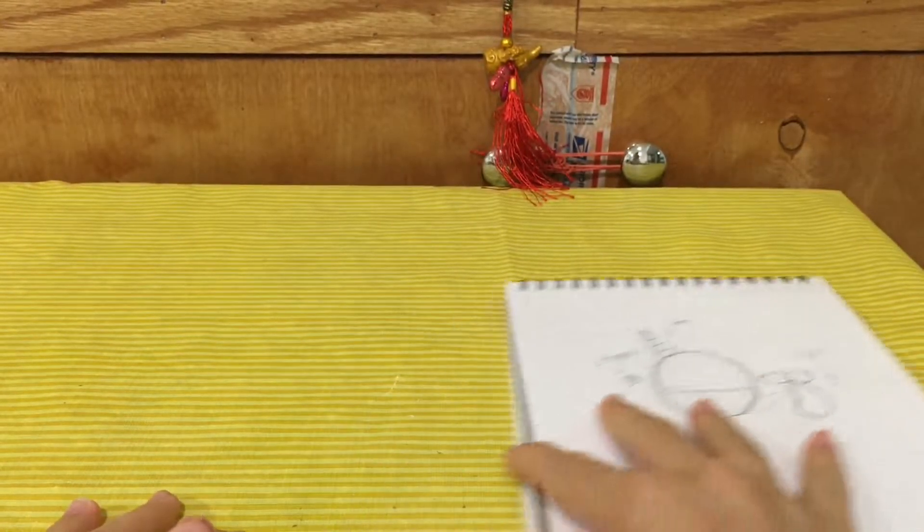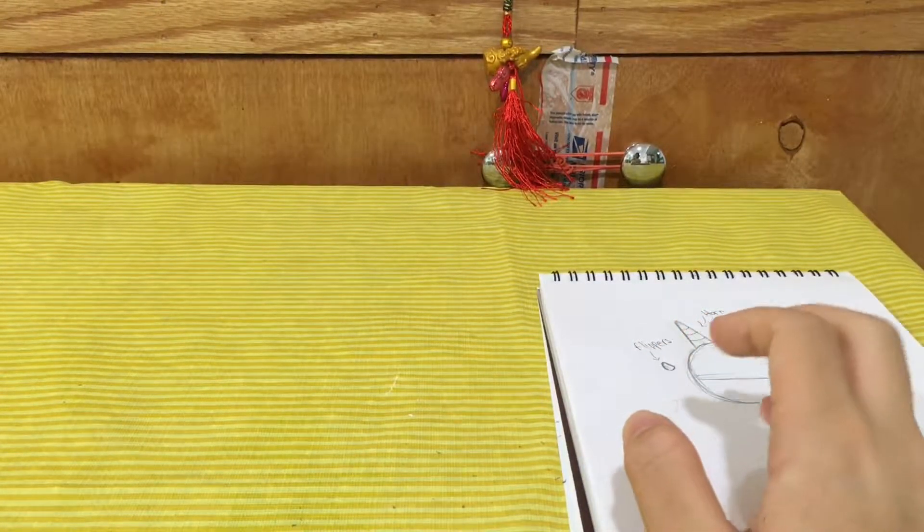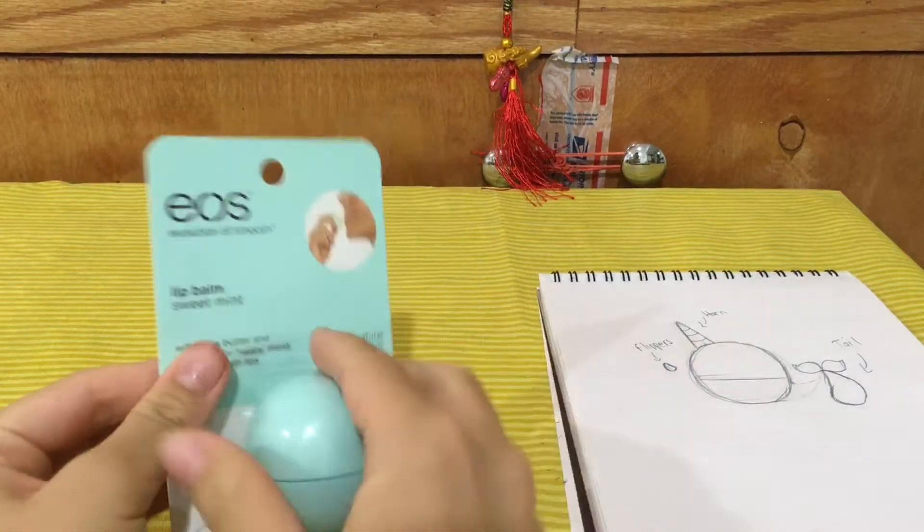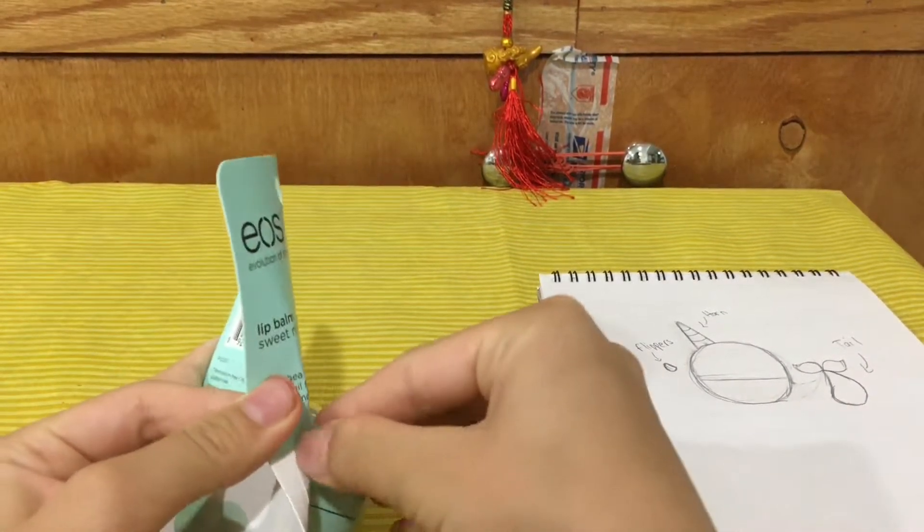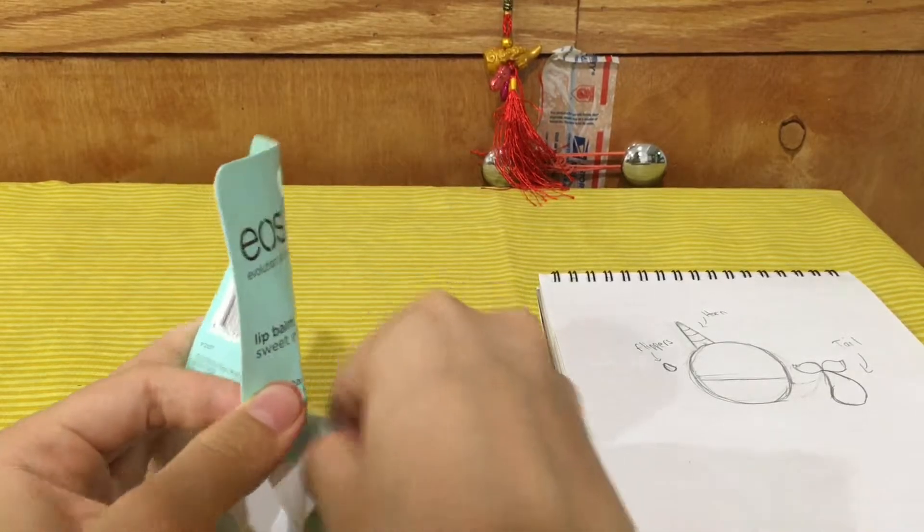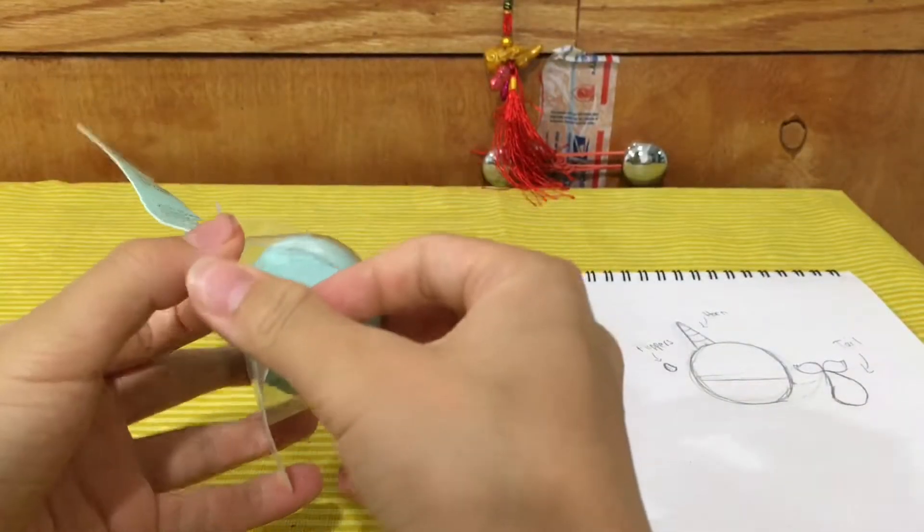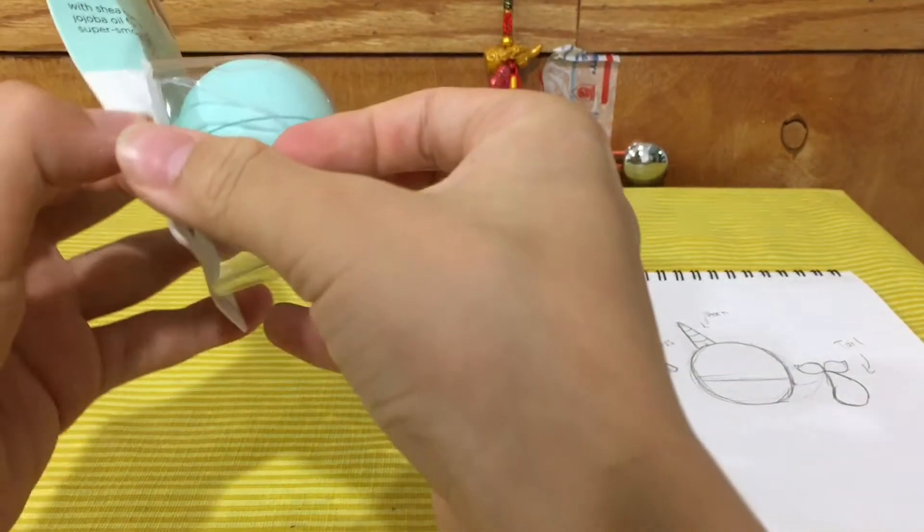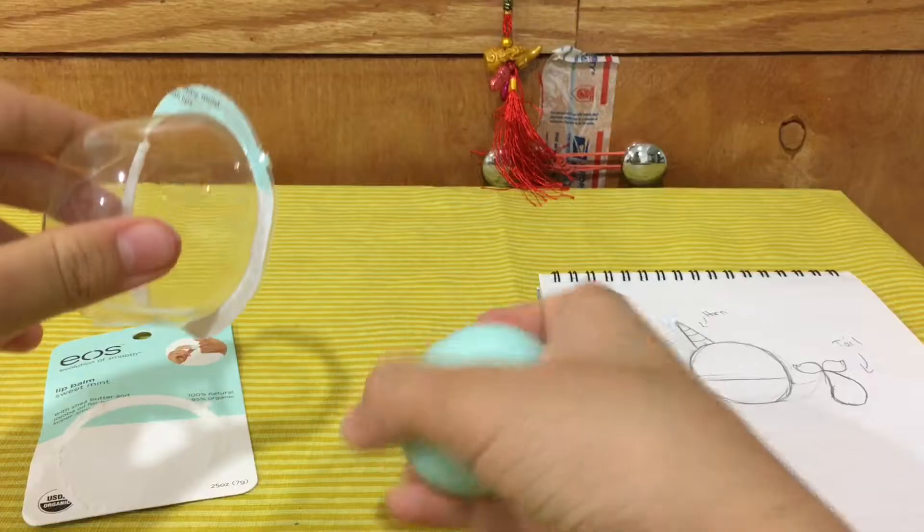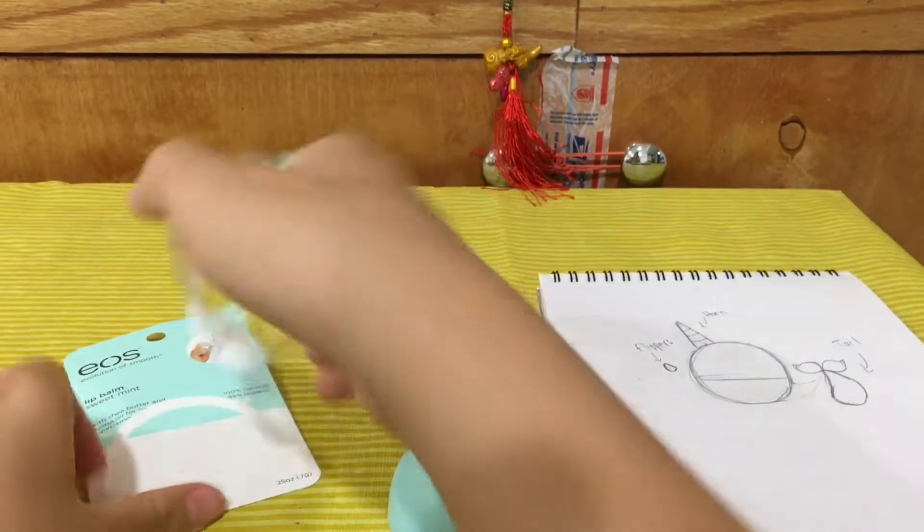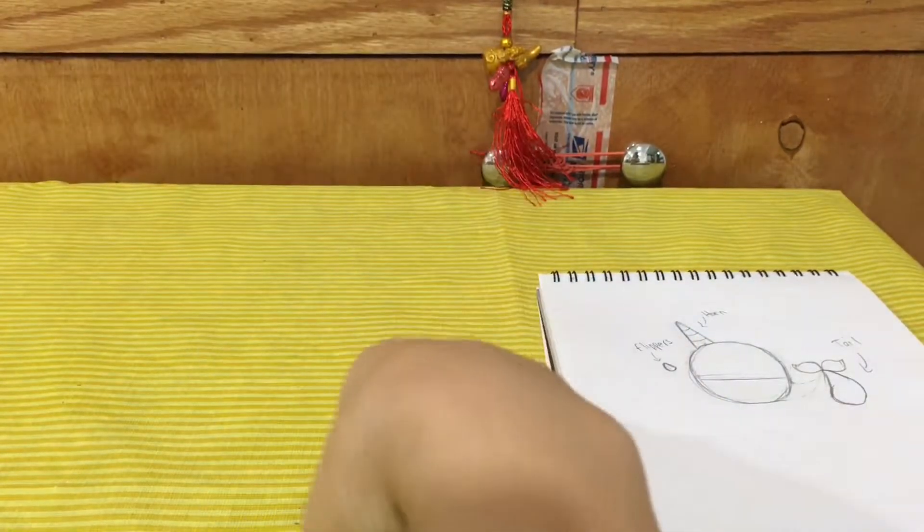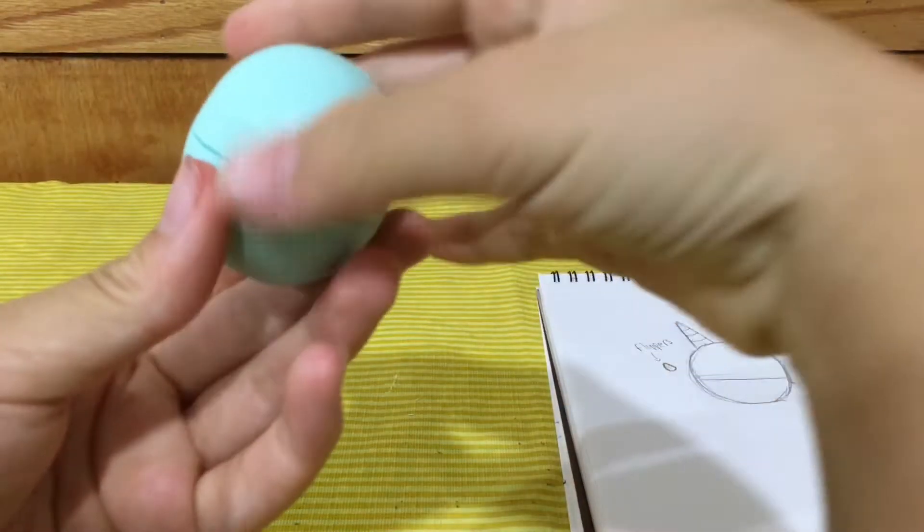Now we're going to take your EOS and take it out of the package. If you already have an EOS, just use that. Or if you don't, just buy one from pharmacies or Target - they're pretty cheap there. Take it out and dispose of the excess packaging.